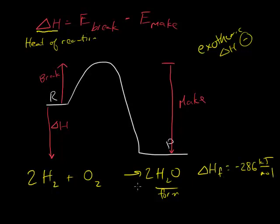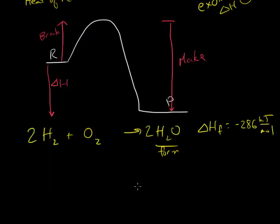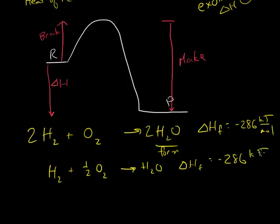Whenever you form a compound from its individual elements, you can also simplify this reaction here so that you have H2 plus a half of an O2 making a water. And the delta H for this reaction is still negative 286 kilojoules per mole. And because it's a mole of the water you're making here, both of these reactions are showing the same information.